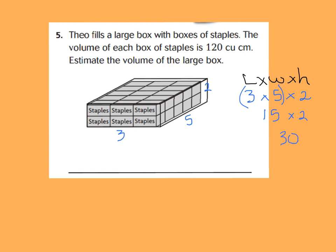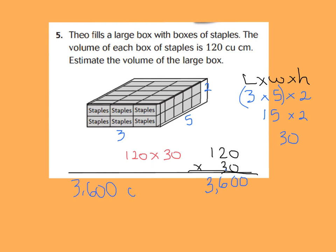We know the volume of each of those staple boxes is 120 cubic centimeters, so our equation is 120 times 30 boxes. If you haven't found this volume yet, go ahead and press pause; if you already found it, let's check together. Using the zero rule, we drop the two zeros and multiply: 3 times 2 is 6, and 3 times 1 is 3. Did you get 3,600? You should have 3,600 cubic centimeters.